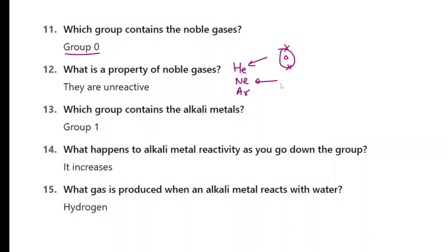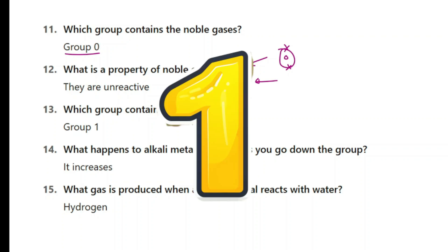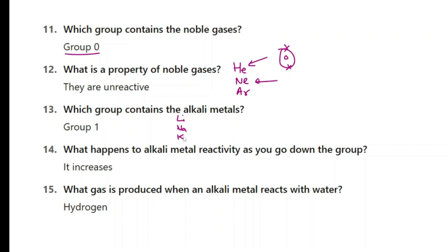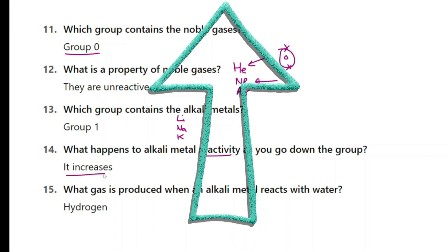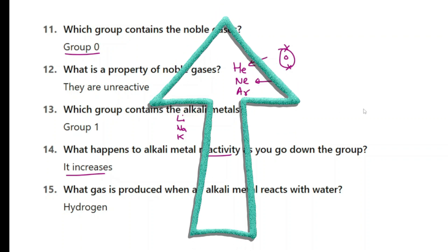Which group contains the alkali metals? Alkali metals are in group 1: lithium, sodium, potassium, rubidium, cesium, francium, and so on. What happens to alkali metal reactivity as you go down the group? As you go down the group they become more reactive — reactivity increases.